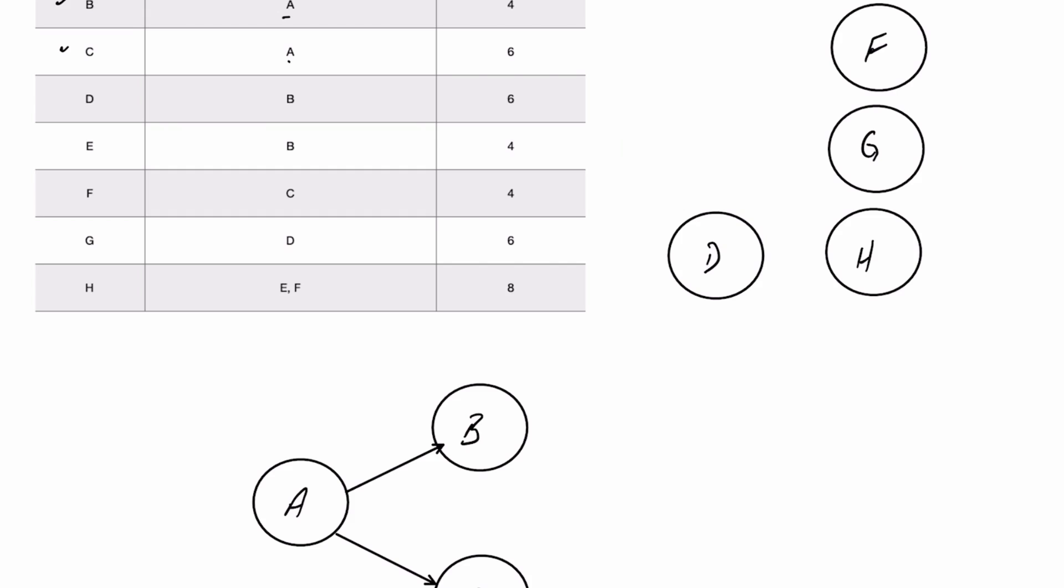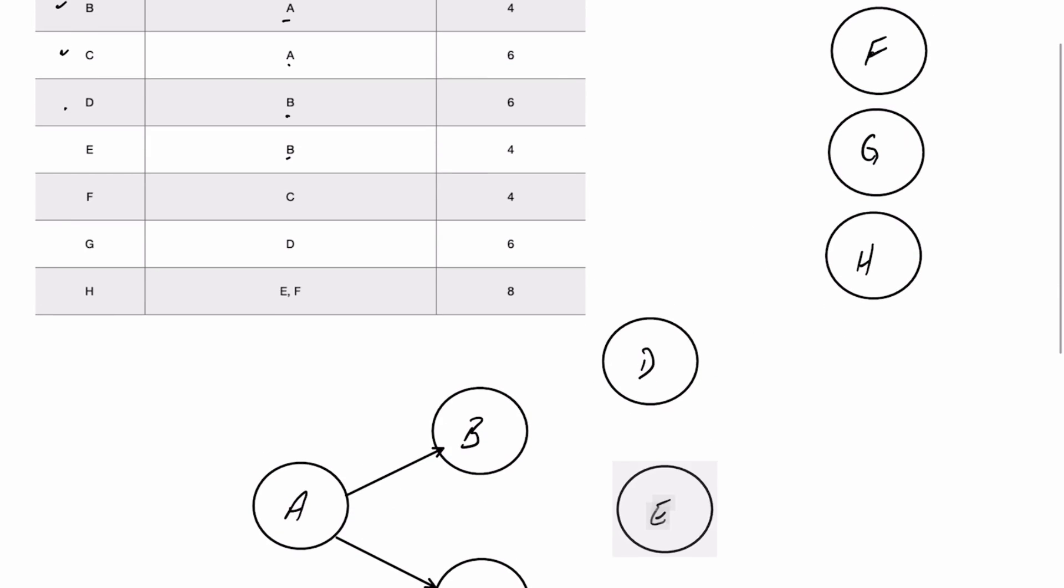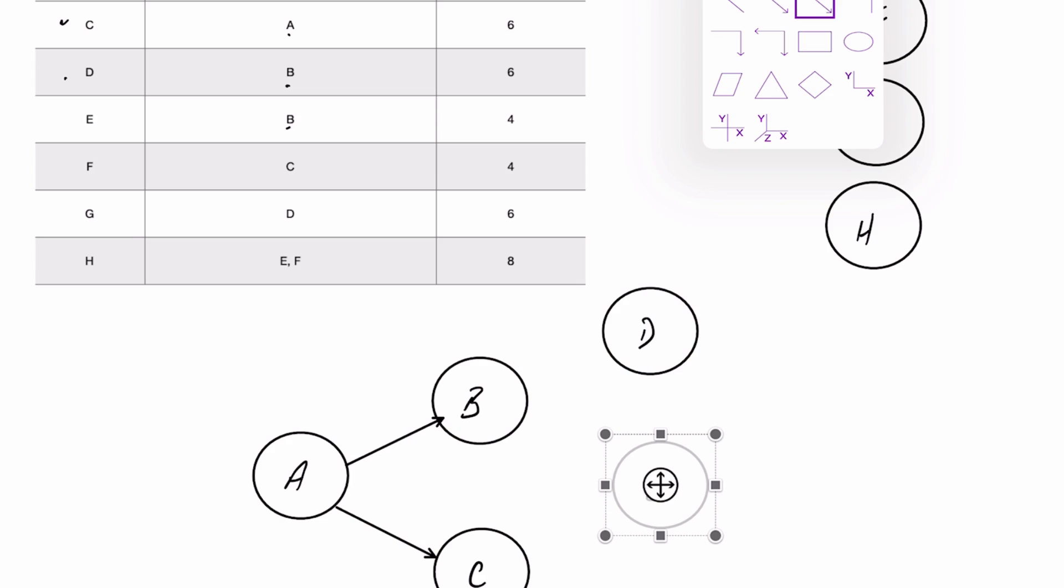The next activity, actually the next two activities, both D and E, have B as an immediate predecessor. So we can grab those two activities, take D, and let's say put that about there on our chart. And then we'll grab Activity E and pull that one somewhere around there like that, and then add a couple of lines to join them.